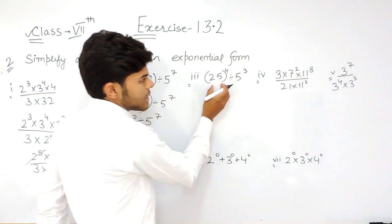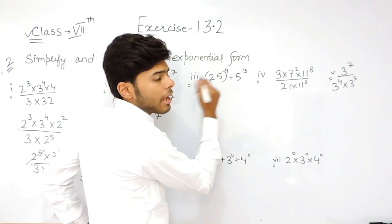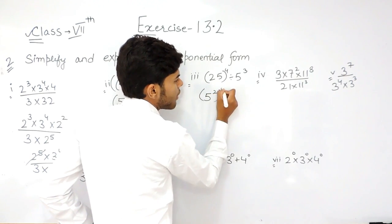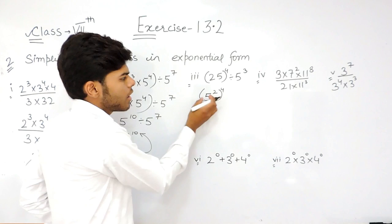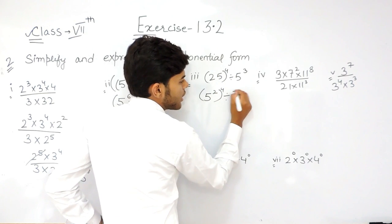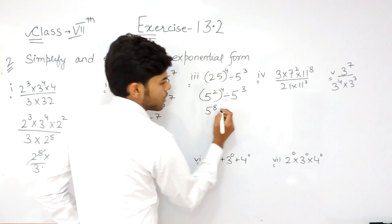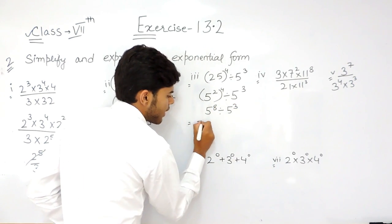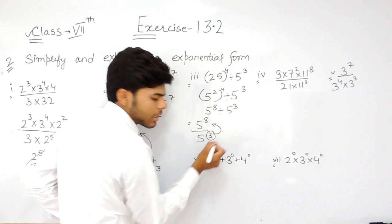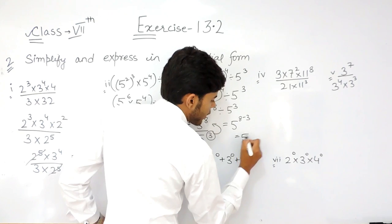Now this can be written — I told you that we have to write it in the exponential form, with the prime factorization form also. So we can write this like 5 to the power 2, whole to the power 4. You see, 5 to the power 2 is 25 and whole to the power 4. And here also it was 25 whole to the power 4 divided by 5 to the power 3. Now this can be written as 5 to the power 8 — that is 4 into 2 — divided by 5 to the power 3. So it will be 5 to the power 8 upon 5 to the power 3. This term will go in the numerator, it will change its sign, so it will be 5 to the power 8 minus 3, and that will be 5 to the power 5.